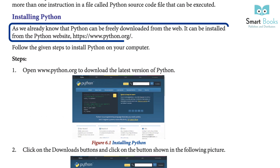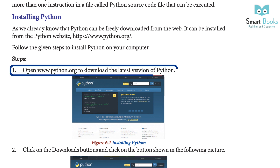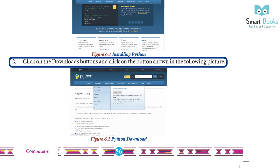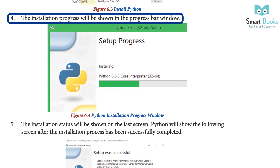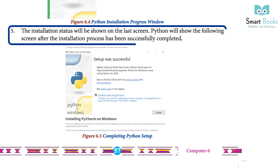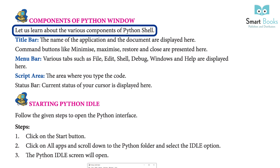Installing Python: Python can be freely downloaded from https://www.python.org. Follow these steps to install Python: 1. Open www.python.org to download the latest version. 2. Click on the Downloads button and click on the button shown. 3. Click on Install Now in the Python Setup window. 4. The installation progress will be shown in the progress bar window. 5. The installation status will be shown on the last screen, and Python will show the following screen after the installation process has been successfully completed.